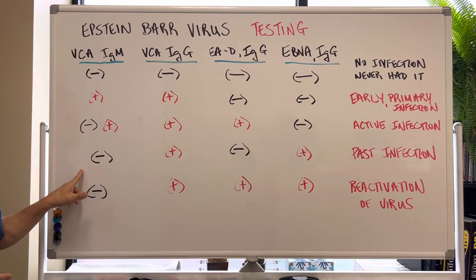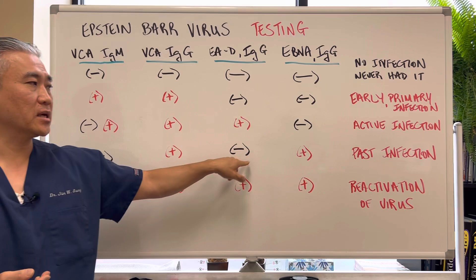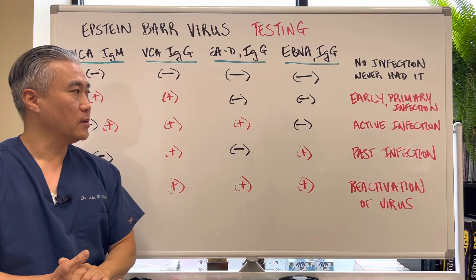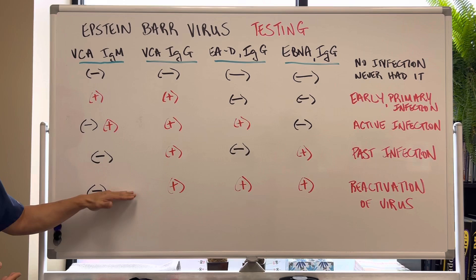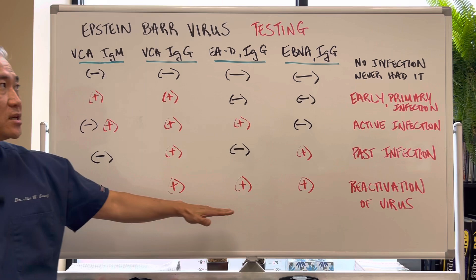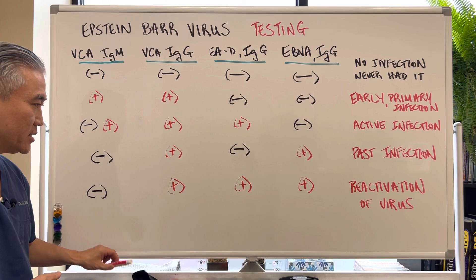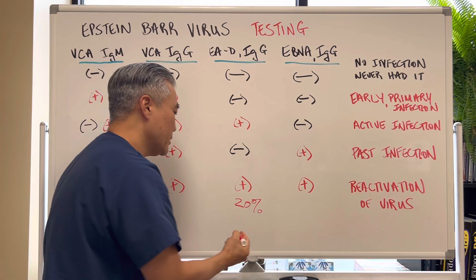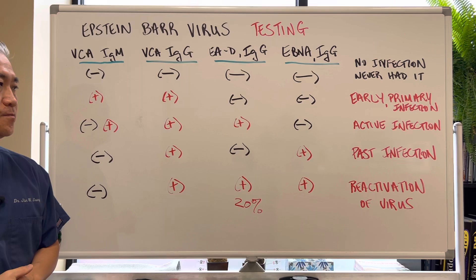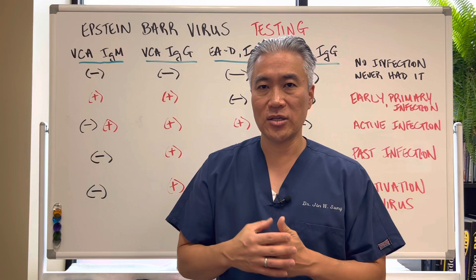When the acute phase passes, the IgM disappears, and then you have a negative IgM, positive IgG, negative early antigen, and positive EBNA — that means you had a past infection. Now, this is where it gets a little tricky. A past infection shows negative IgM, positive IgG, and positive EBNA. But in about 20% of cases, early antigen levels may persist at elevated levels even after the initial infection.